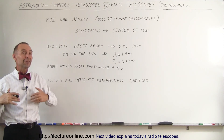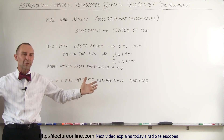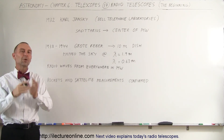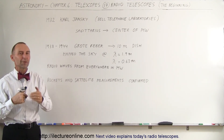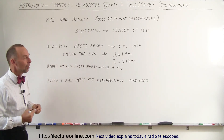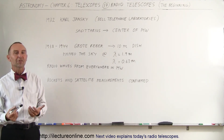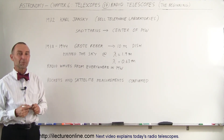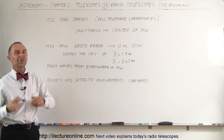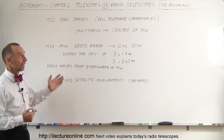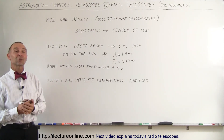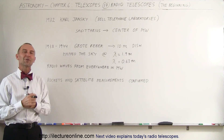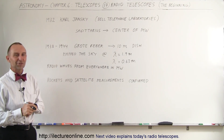Now that we have interferometry with a whole array of radio telescopes, we're doing a lot better at getting exact positioning on where those signals are coming from. We understand a lot better today what those radio signals are and what's causing them — whereas before it was still a mystery; we just knew they were everywhere and had to figure out what they were. And that's the beginning of radio telescopes and the exploration of space using radio radiation.